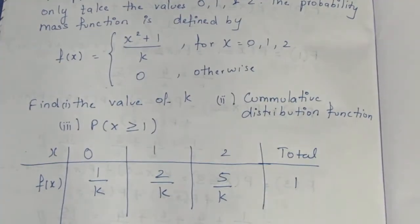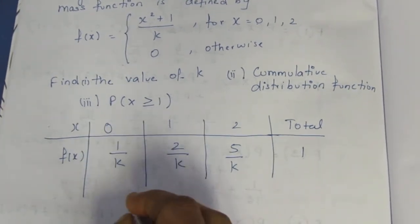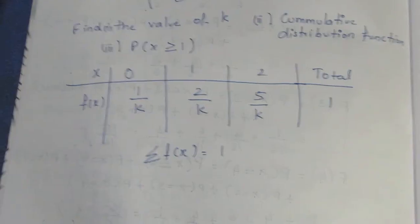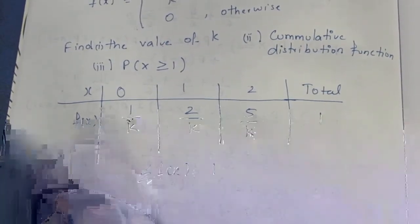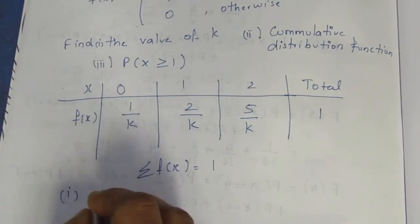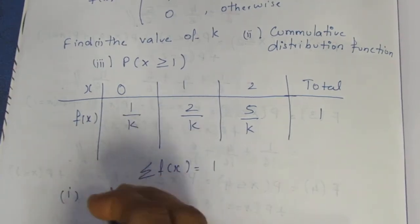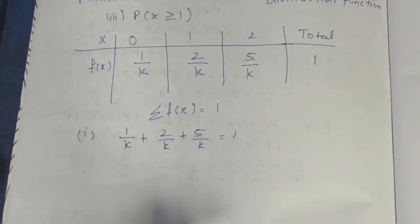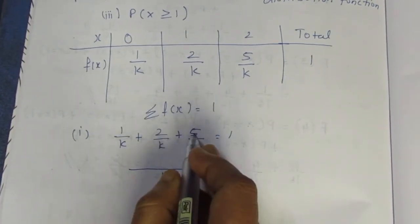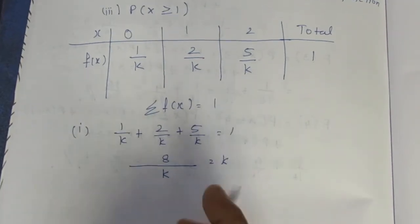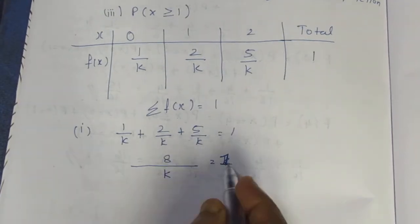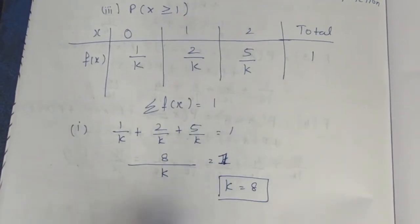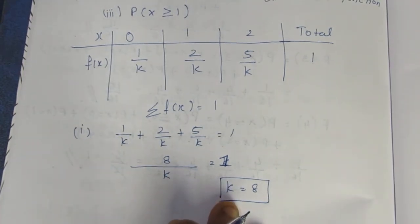Since the total probability must equal 1, the summation of f(x) = 1. Adding all values: 1/k + 2/k + 5/k = 1, which gives 8/k = 1, therefore k = 8.